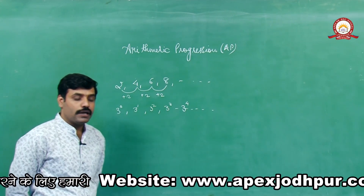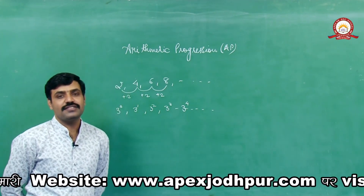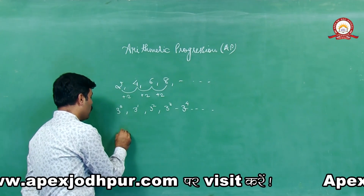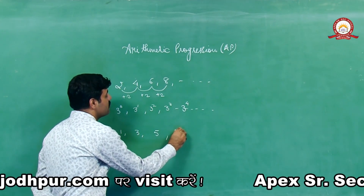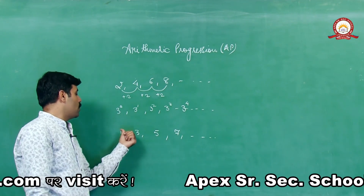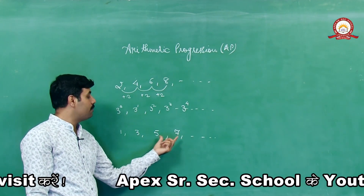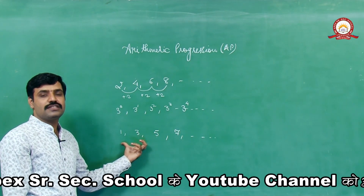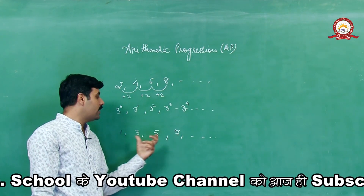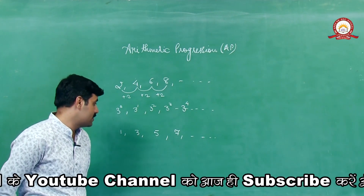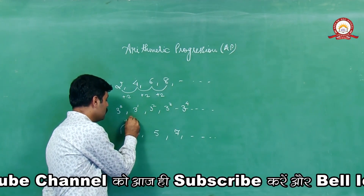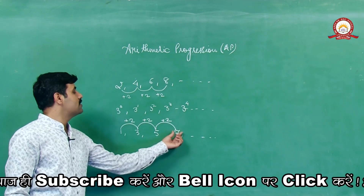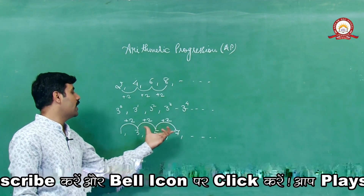अब हम आते हैं AP पे। अगर कोई particular sequence एक particular difference के साथ throughout रहता है, तो उसे हम AP कहते हैं। जैसे 1, 3, 5, 7 and so on — इन सब में difference plus 2 का है। That means if any sequence has the same difference between two consecutive numbers, then that sequence is known as Arithmetic Progressions। यहाँ consecutive numbers के बीच का difference same है।